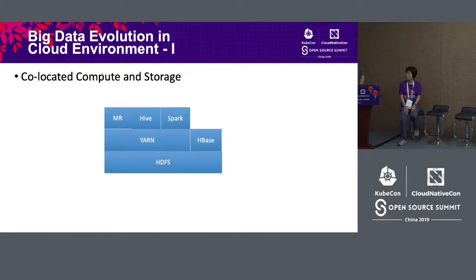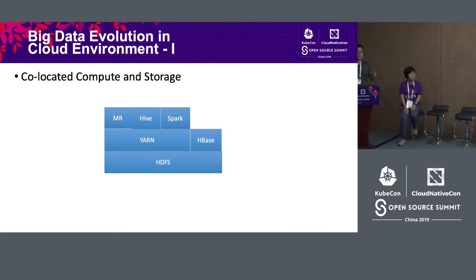For big data itself, the earliest big data was based on the Google GFS paper and contributions from open source providers. The basic idea is that storage and computation nodes are co-located. The benefit is that when you need compute resources and storage, you can minimize your network round trips to get data, which helps better parallelize your data computing and increase calculation efficiency.